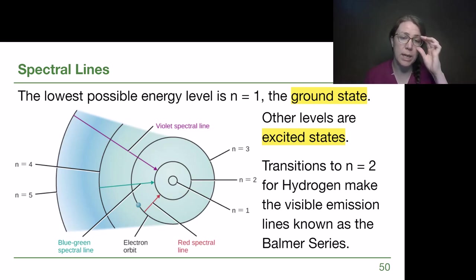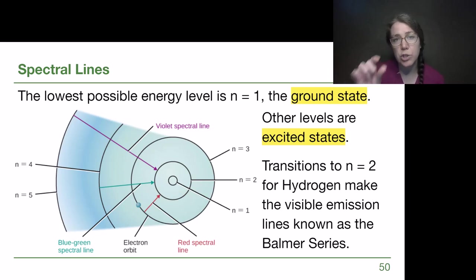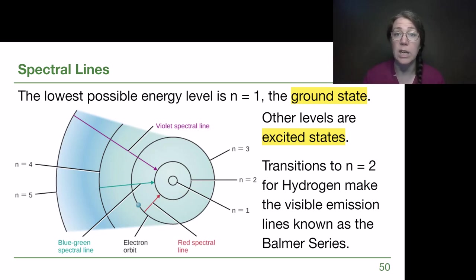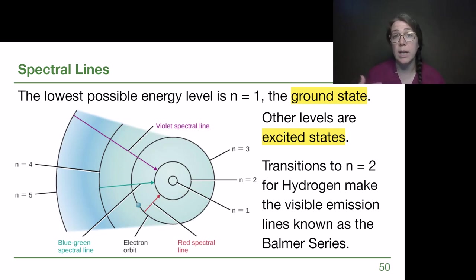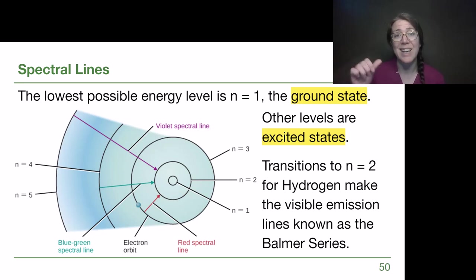Here we're displaying the different options for a hydrogen atom. If we go from n=3 to n=2, that small change in energy produces a low-energy red photon, and we get a red spectral line. From n=4 to n=2, we get a medium-energy photon in the visible that produces a blue-green spectral line. From n=5 down to n=2, the electron jumping that bigger gap will emit a higher-energy violet photon. When we see those particular bright lines in a spectrum, we know hydrogen has to be present — it's a spectral fingerprint.